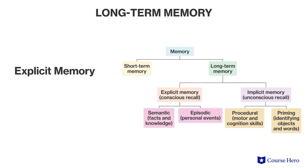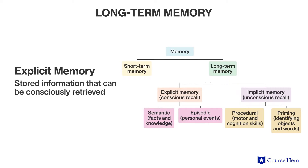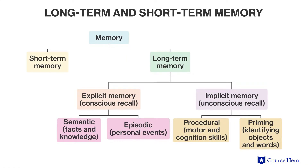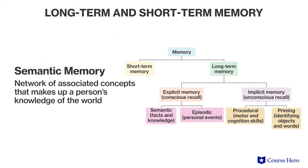Explicit memory, also called declarative memory, is stored information that can be consciously retrieved. For example, knowing that a golden retriever is a type of dog. This type of explicit memory for facts is called semantic memory, in which a network of associated concepts makes up a person's knowledge of the world.